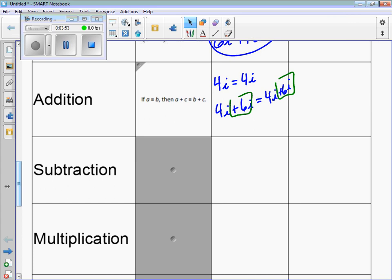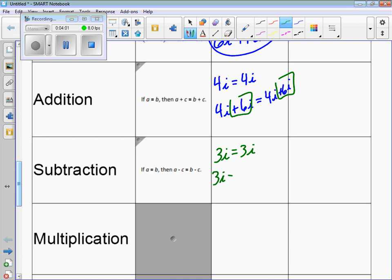And likewise, subtraction works the same way. So if I have 3i equals 3i, and then the next step I subtract 2i, keep it equal, I subtract it on both sides. Subtracting on both sides of the equation, that is subtraction.